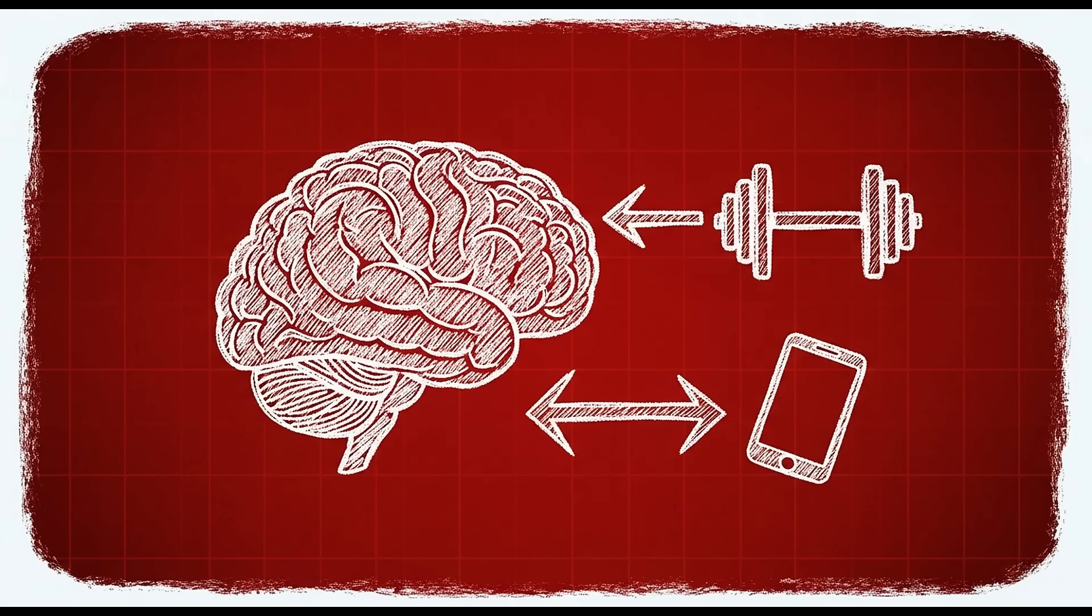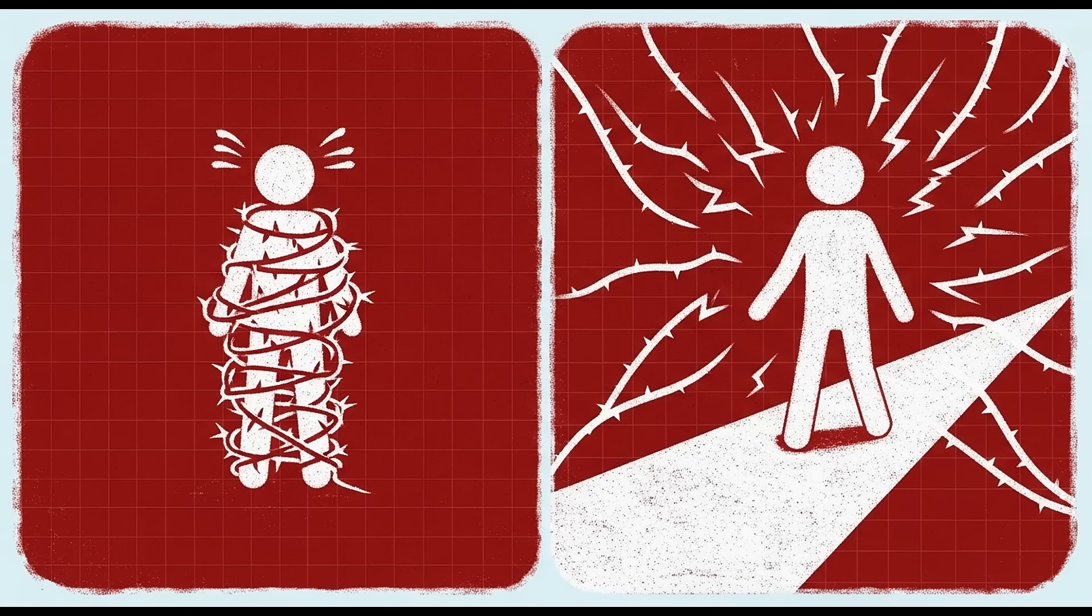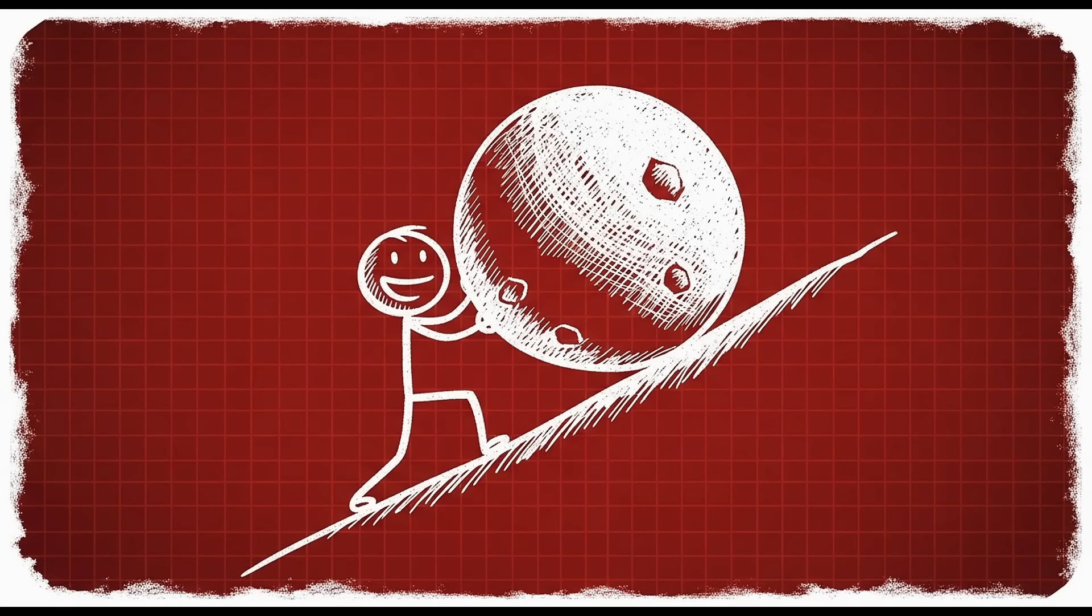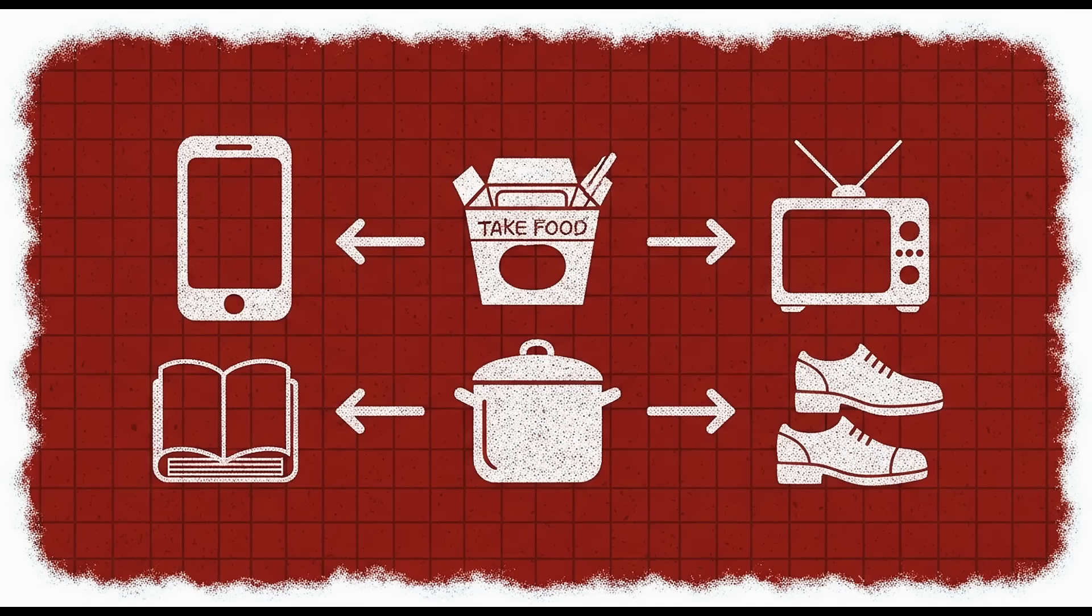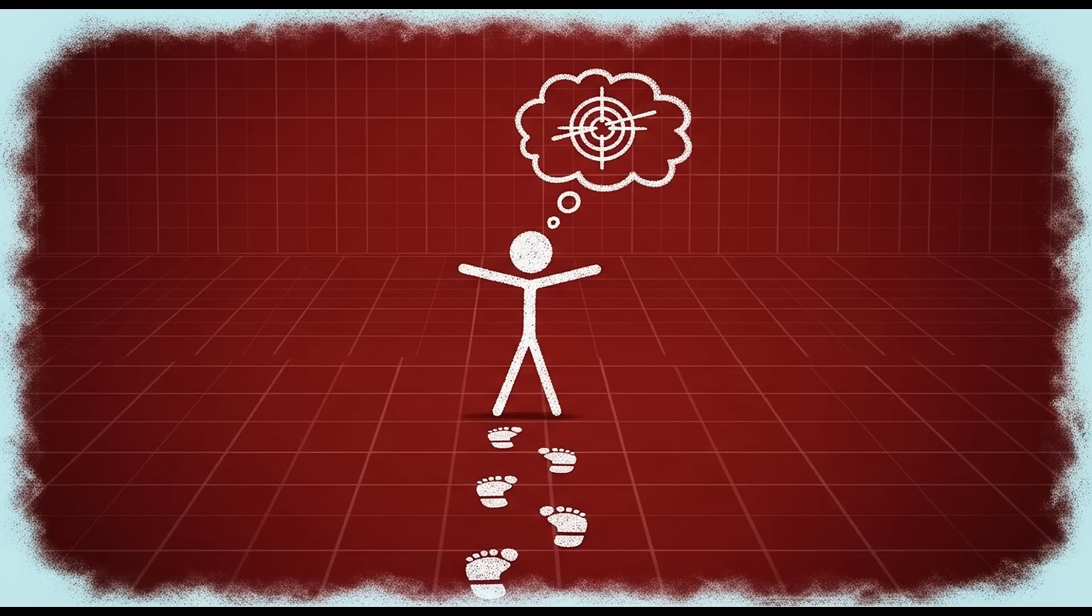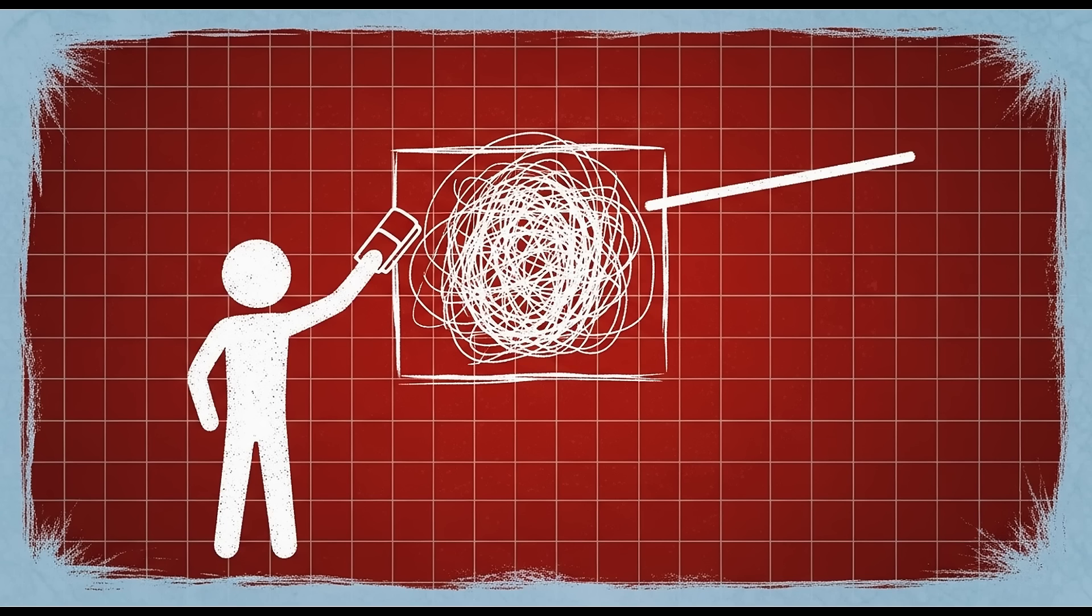When you remove the overwhelming sources of easy pleasure, something remarkable happens. Your dopamine receptors begin to upregulate. They become more sensitive. Suddenly activities that seemed boring before start feeling engaging. The satisfaction of completing a task, the energy after a workout, the calm after focused work, these natural rewards start registering again. You're not becoming someone new, you're returning to baseline. You're remembering what it feels like to be driven by internal satisfaction rather than external stimulation.